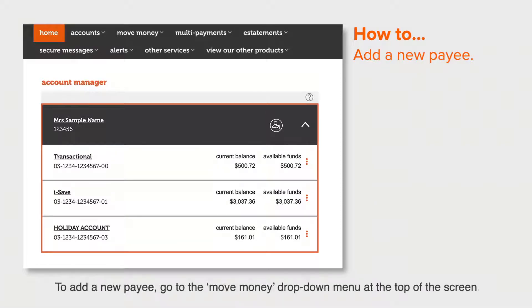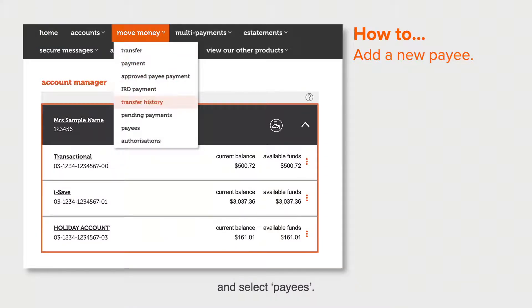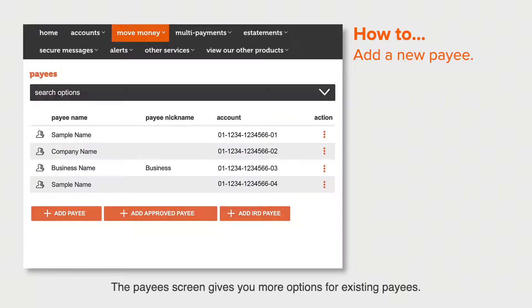To add a new payee, go to the move money drop-down menu at the top of the screen and select Payees. The payee screen gives you more options for existing payees.